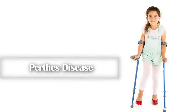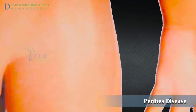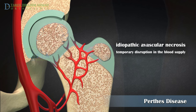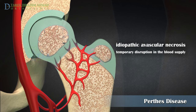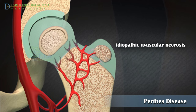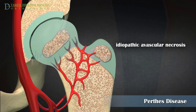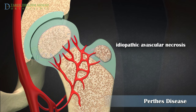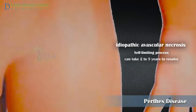Perthes' disease, also called idiopathic avascular necrosis of the femoral head, is a rare childhood condition that affects the hip. It occurs when the blood supply to the rounded head of the femur (thigh bone) is temporarily disrupted. Without an adequate blood supply, the bone cells die — a process called avascular necrosis. The ball part of the femur can eventually collapse when the bone is weakened if the blood supply is interrupted long enough. When the blood supply returns, the bone can improve its strength, but the shape of the femur can be permanently distorted. Most children with Perthes' disease eventually recover.